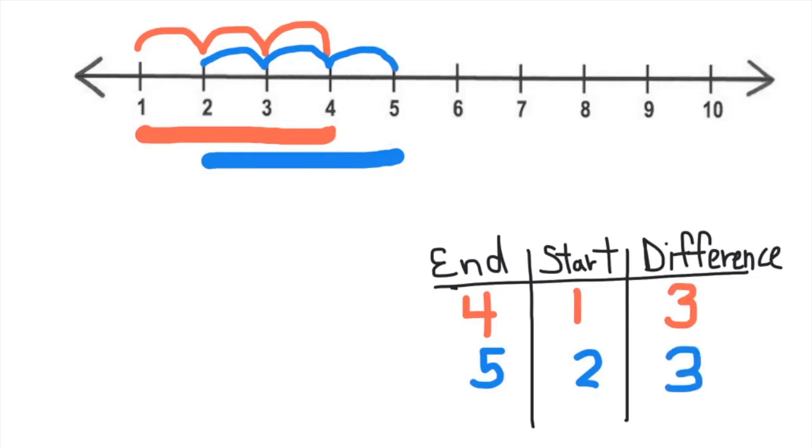And one more example, 4 and 7. So here we have 7, the ending point, 4 is the starting point, and the distance or difference between those two points is still 3.